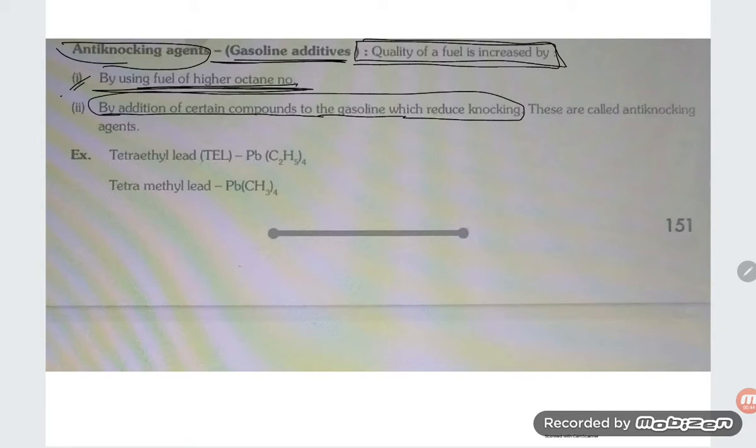These are called anti-knocking agents. For example, TEL - tetraethyl lead Pb(C2H5)4 - is one of the most important anti-knocking reagents.